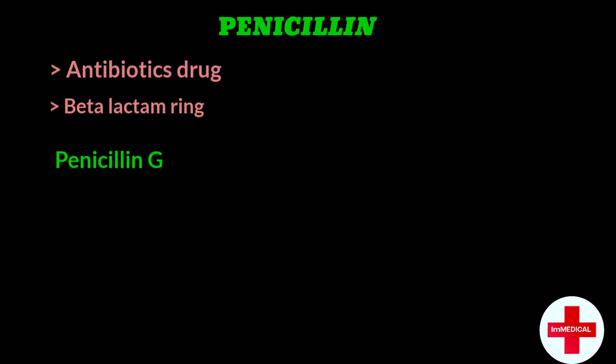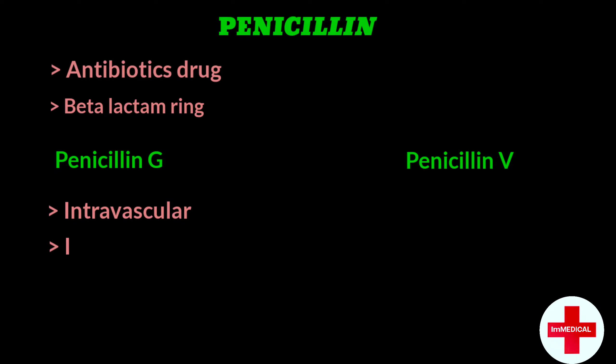Penicillin has two types: Penicillin-G and Penicillin-V. Penicillin-G is available in the market in IV form and IM form. Penicillin-V is available only in oral form.